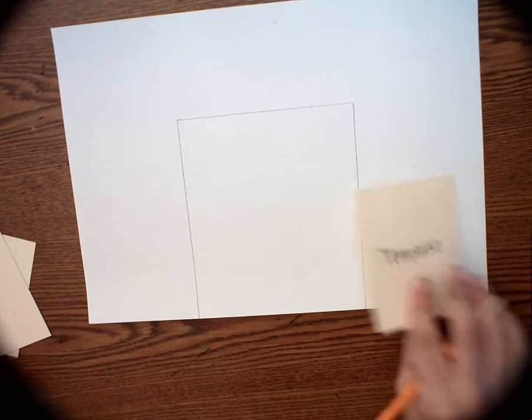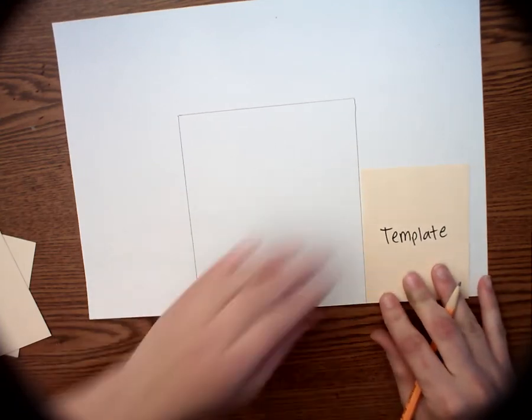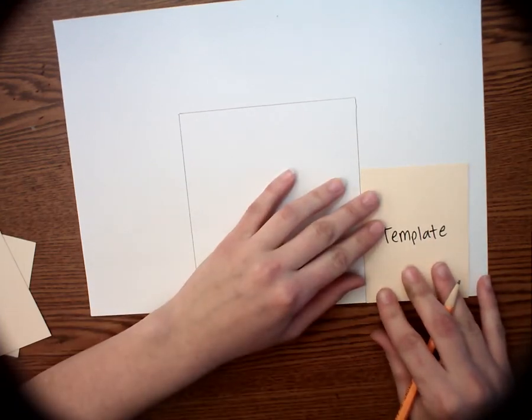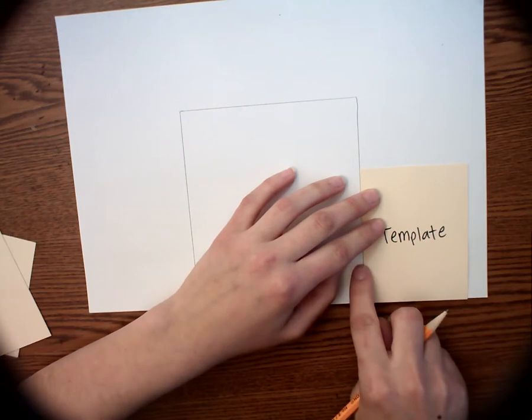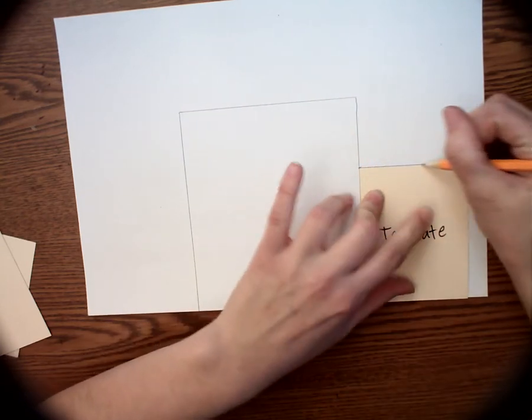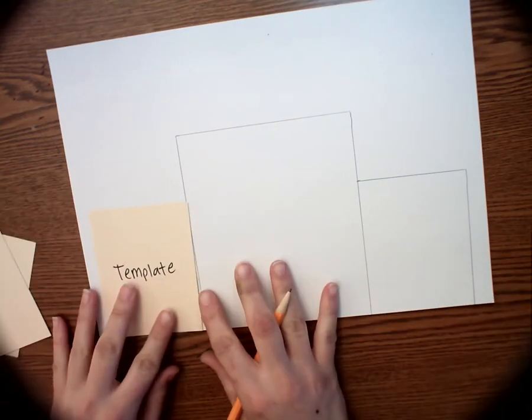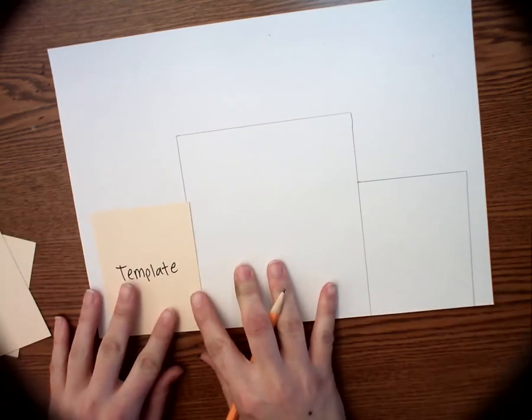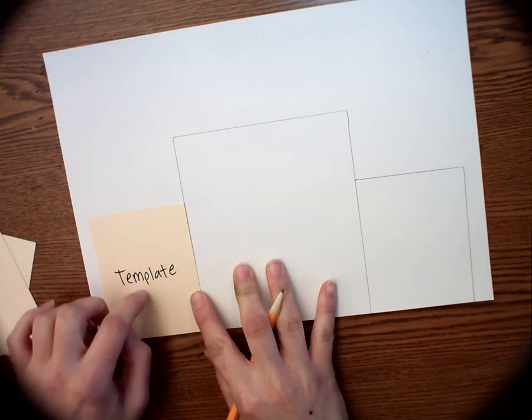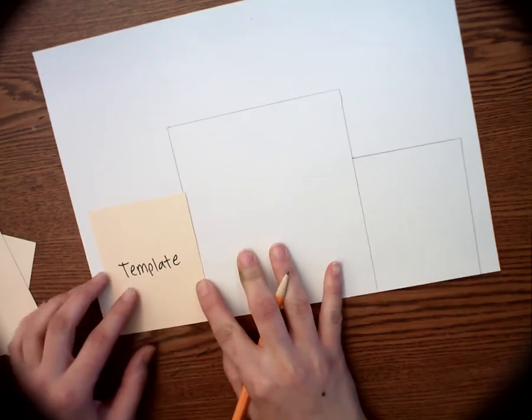Now I'm going to take my template for the right side, line it up to the bottom and the side, and trace that. Same thing on the other side. If you were using a different template, that's where you would use the different one now. You've got to make sure it's straight.